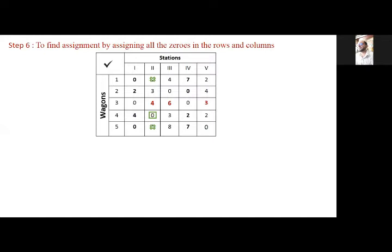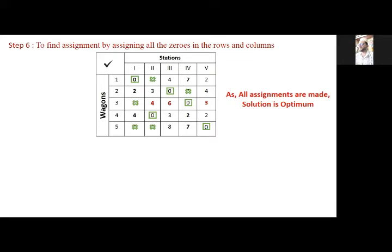Again we follow the same procedure — checking for a single zero in each row. Starting with the first row, a single zero is found so an assignment is made, and all zeros in that row or column are cancelled. The second line has two zeros, so skip it; the third line has a single zero — assign it and cancel. The last two zeros are both single, so those are assigned. All assignments are made: 1 with 1, 2 with 3, 3 with 4, 4 with 2, and 5 with 5.